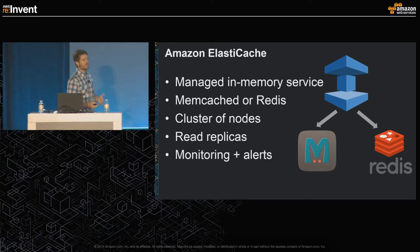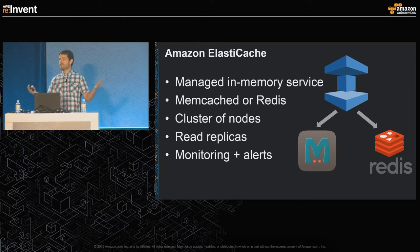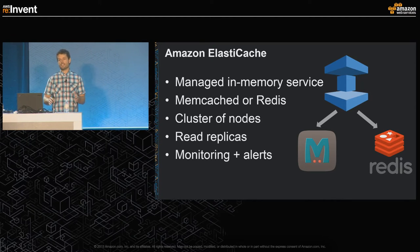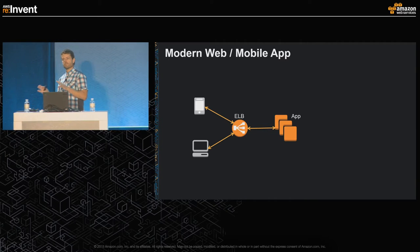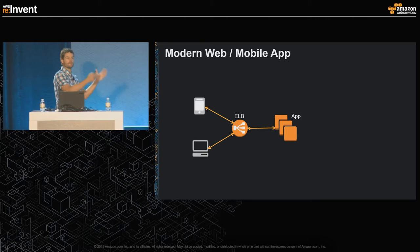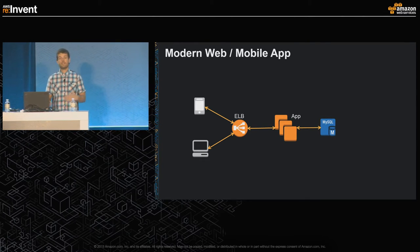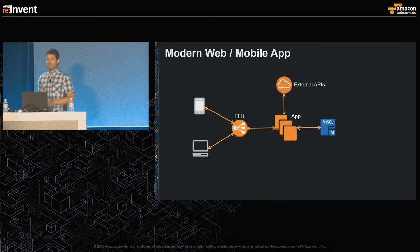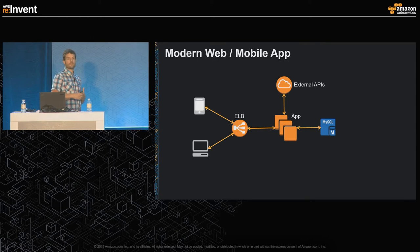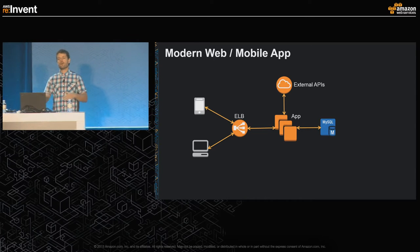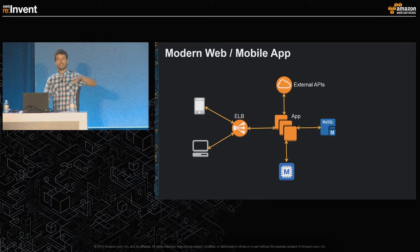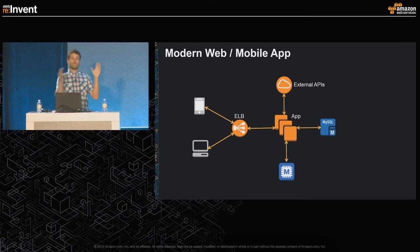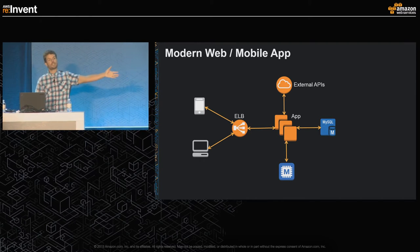ElastiCache is our managed in-memory service. You have the choice of Memcache or Redis. With ElastiCache, you define a cluster of nodes, and with Redis you have the option to do read replicas as well. We take care of all the undifferentiated heavy lifting — managing a cluster of in-memory cache nodes, monitoring, alerts, and so forth. ElastiCache fits into your app alongside your load balancer, application tier, database — whether MySQL, DynamoDB, or Cassandra — and external APIs like Facebook login or third-party data streams.